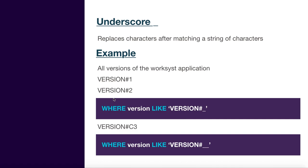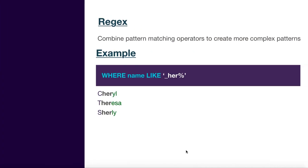Executing that query gives you records matching 'version#1', 'version#2', and so on. Note there's exactly one character after the number symbol replaced by the underscore. If a version has two characters after the symbol — like 'version#c3' — you would need two underscores, because each underscore replaces exactly one character.